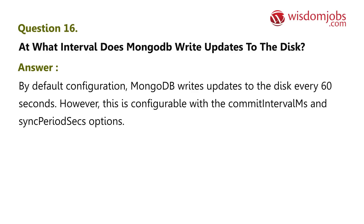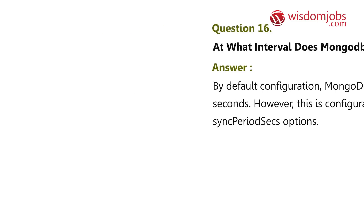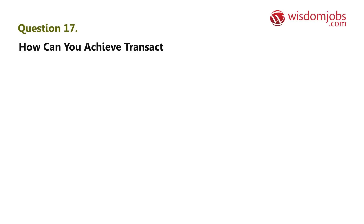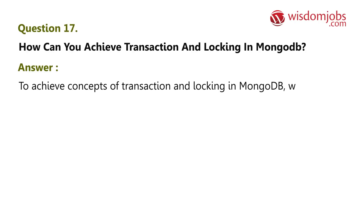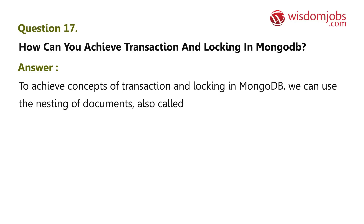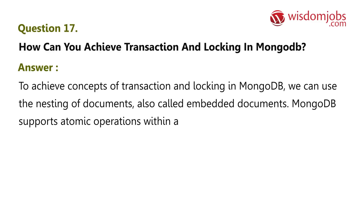Question 17: How can you achieve transaction and locking in MongoDB? Answer: To achieve the concepts of transaction and locking in MongoDB, we can use the nesting of documents, also called embedded documents. MongoDB supports atomic operations within a single document.